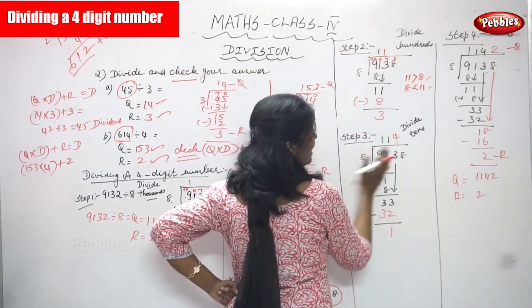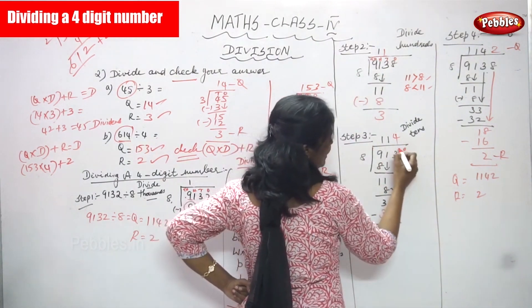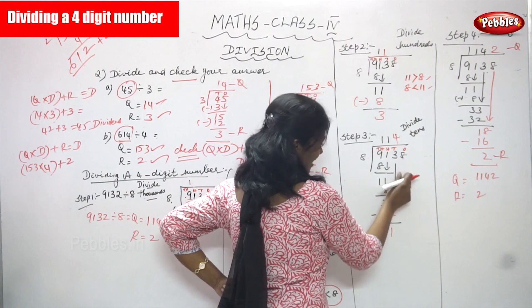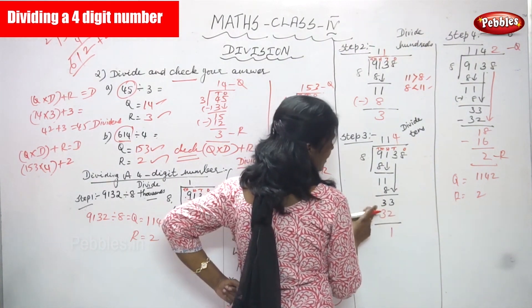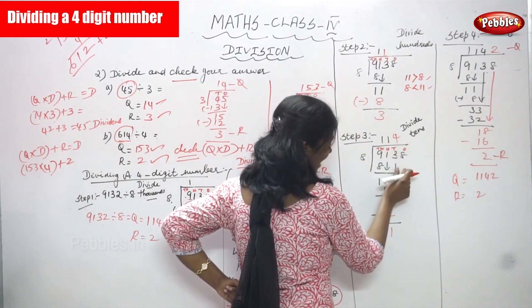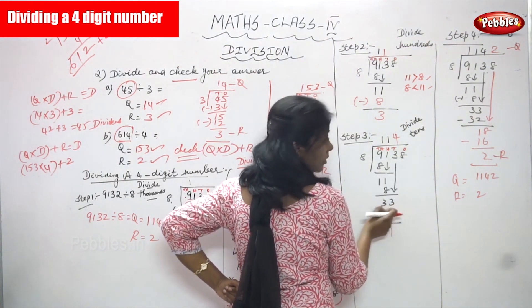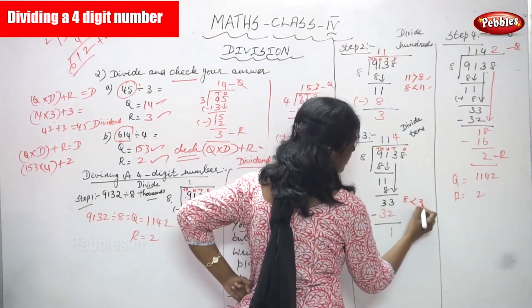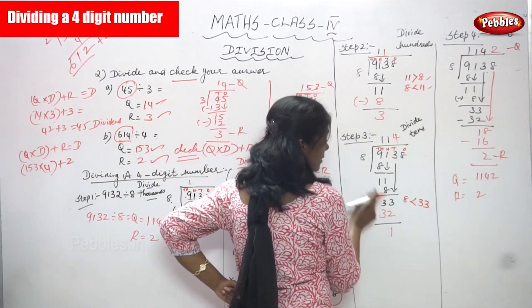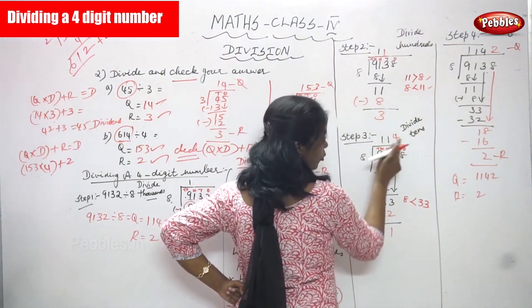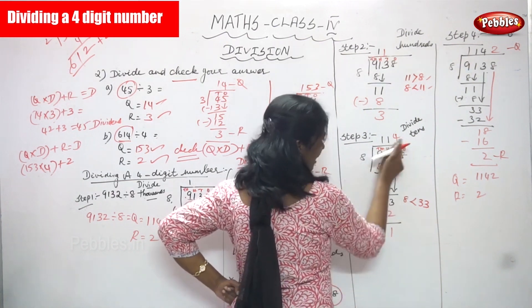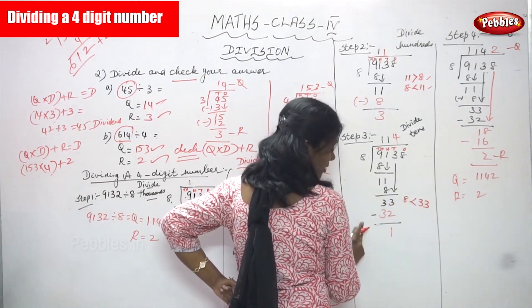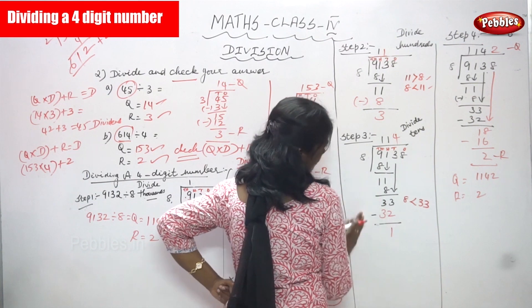Step three: divide tens. Bring down the tens place digit — remainder is 3, so bring down 3, giving 33. Compare 8 and 33: 8 is less than 33. 8 goes into 33 four times — 8 into 4 is 32. Write 32 below 33. Subtract: 33 minus 32 equals 1. Step three is complete.